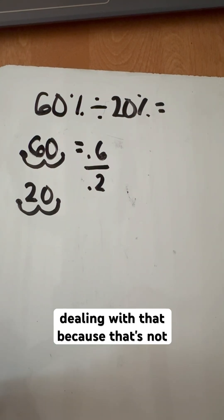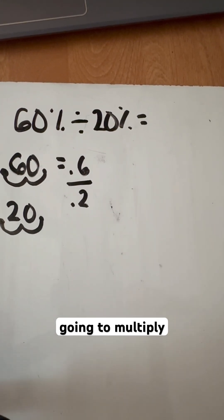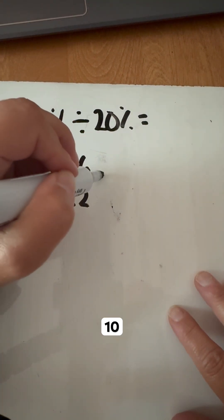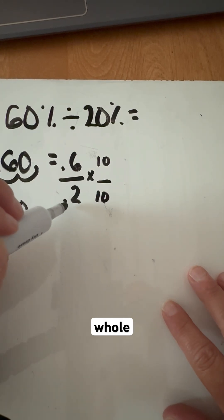Now we don't want to be dealing with that because that's not easy for us to be dealing with. So what I'm going to do is I'm going to multiply both of these numbers by 10 and that's going to allow me to be at some whole numbers.